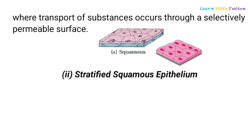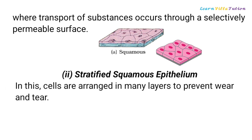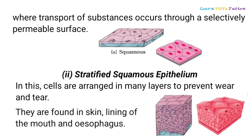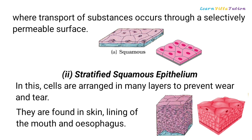Stratified Squamous Epithelium: in this type, cells are arranged in many layers to prevent wear and tear. They are found in the skin, lining of the mouth and oesophagus.